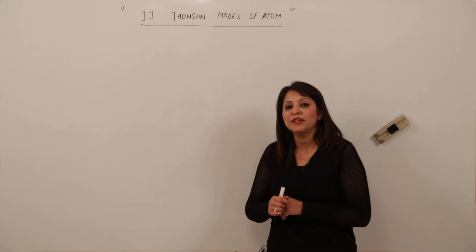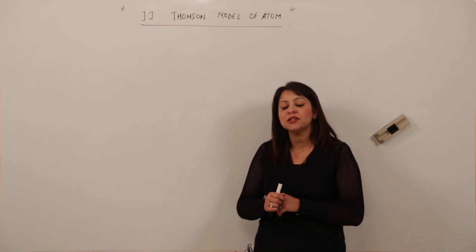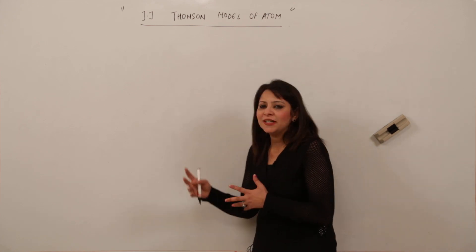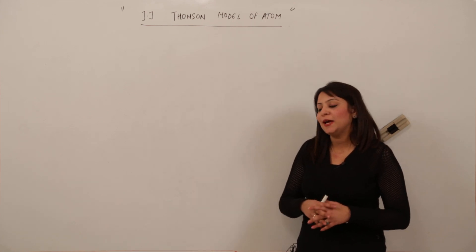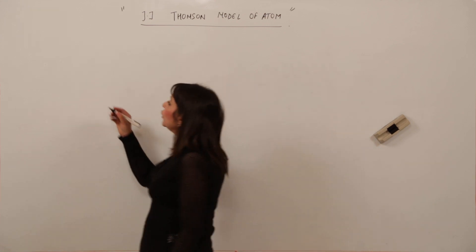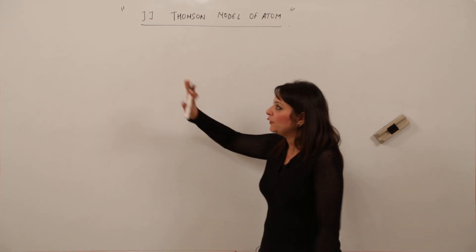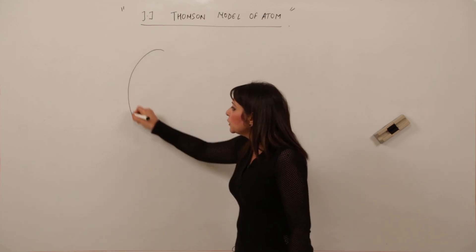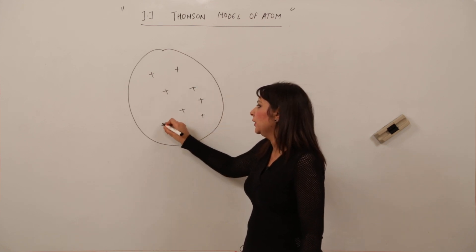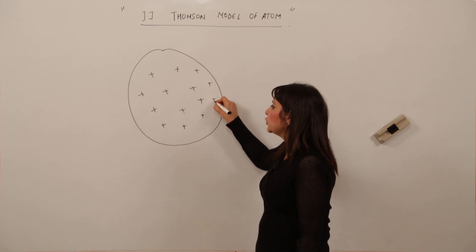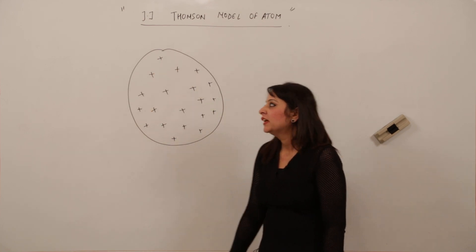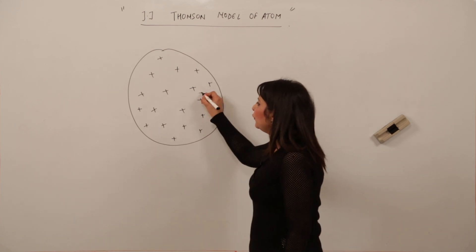The first discovery of subatomic particles was done by J.J. Thomson. Although he ultimately failed to fully explain atomic structure, he made the first attempt. According to him, the atom is a positively charged sphere — a sphere which has uniform positive charge distributed all over it.